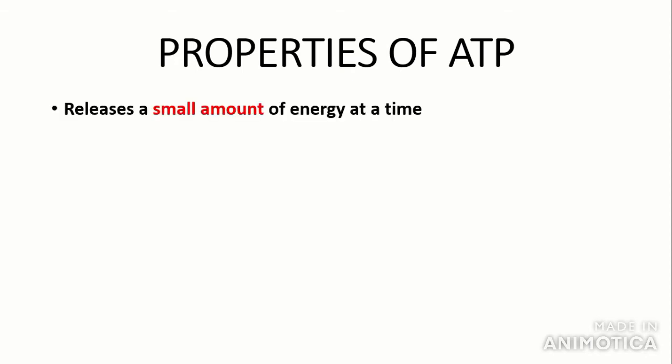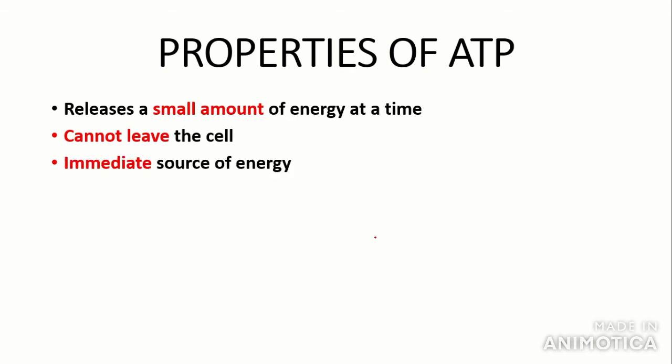Now you need to know about the properties of ATP. The first property is that it releases a small amount of energy at a time, which is crucial as it avoids the death of cells through heat, since energy release is sometimes wasted as heat. This also means the body must synthesize a large amount of ATP to compensate. ATP also cannot leave the cell, which allows it to be constantly used for its various functions. It is an immediate source of energy as ATP hydrolysis is a simple one-step reaction. It is also soluble, which is again very important.